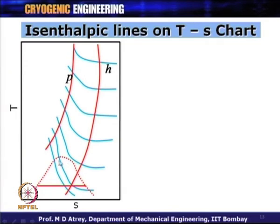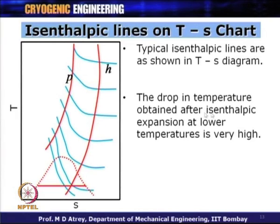If I plot isenthalpic lines on a T-S chart — showing the dome where liquefaction happens — you can see that if the gas is expanded isenthalpically near room temperature, delta T is small. But as you go to lower temperatures and expand isenthalpically, the delta T becomes much larger. The drop in temperature obtained after isenthalpic expansion is very high at lower temperatures.